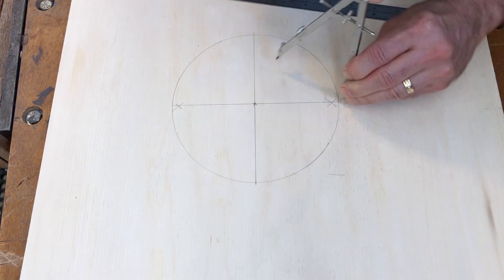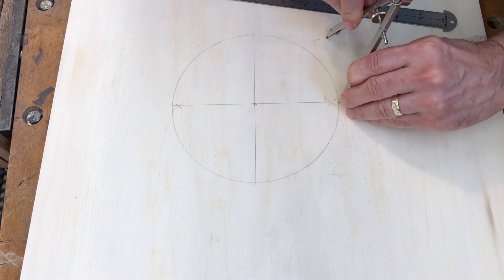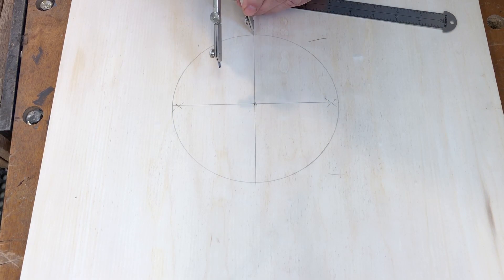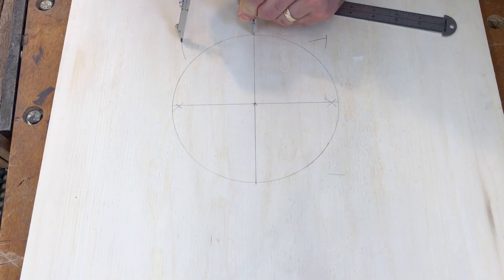We're gonna make an arc here, an arc down here. Make these fairly long, because you want to be able to intersect them. Then we're going to work our way around the circle, doing the same thing.